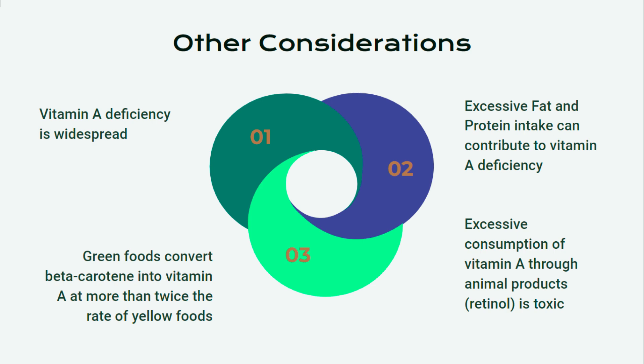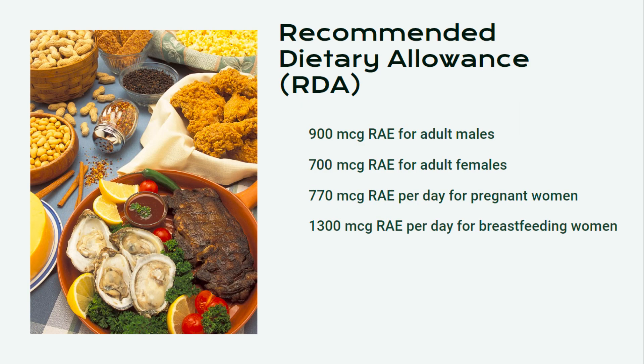In the new nutritional rules, vitamin A is now measured in micrograms RAE — retinol activity equivalents. In 2024, the vitamin A recommended dietary allowance for adults age 19 and older is 900 micrograms RAE for males, 700 micrograms RAE for females, 770 micrograms RAE for pregnant women, and 1,300 micrograms RAE for breastfeeding women.